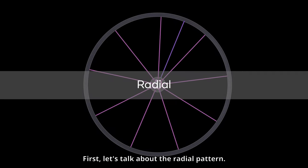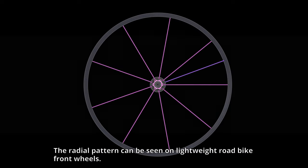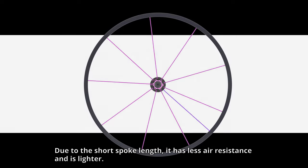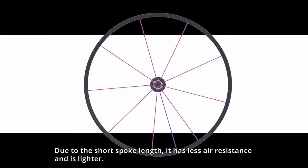First, let's talk about the radial pattern. The radial pattern can be seen on lightweight road bike front wheels. Due to the short spoke length, it has less air resistance and is lighter.